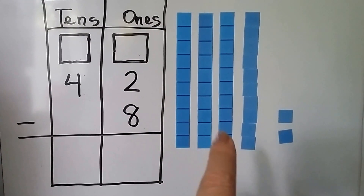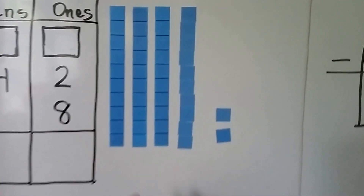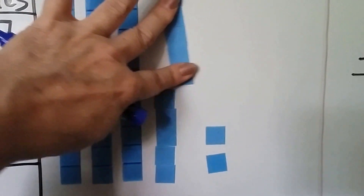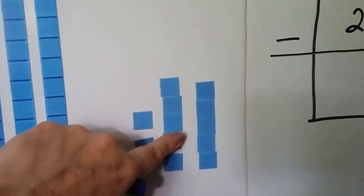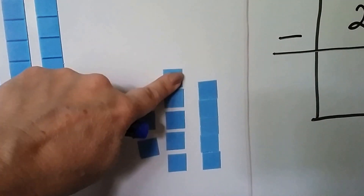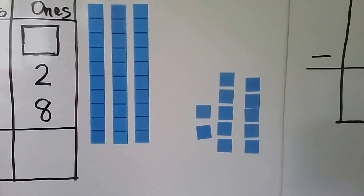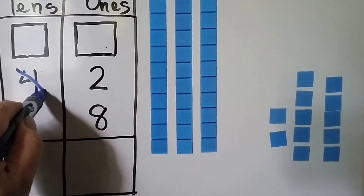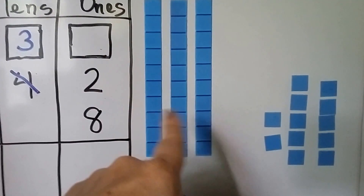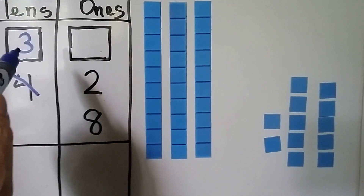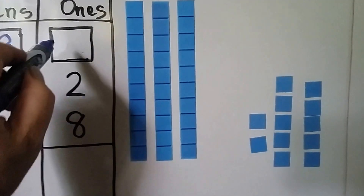Here we have 4 tens and 2 ones. We can break one apart and give it to the 1's place. Instead of a 10, we now have 10 ones. We took 1 away from the 4 tens and it became 3 tens. We gave that 1 ten to the 1's place, so now instead of 2 ones, we have 12 ones.